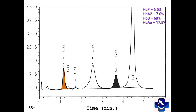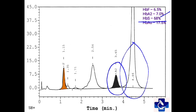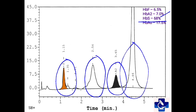In this graph, we have HbS of around 68%. HbA2 is quite raised at near about 7%, hemoglobin F is around 6.5%, and we have adult hemoglobin A0 of around 17.5%. Now, in sickle homozygous, hemoglobin A0 is not produced. So there are two scenarios: this patient may have sickle and beta-plus thalassemia — a double heterozygote — or the patient may have had recent multiple blood transfusions.